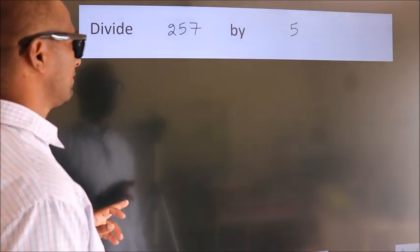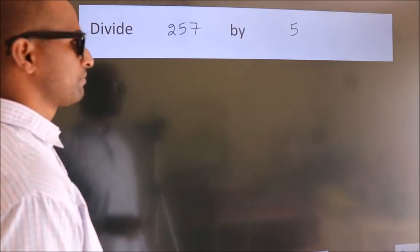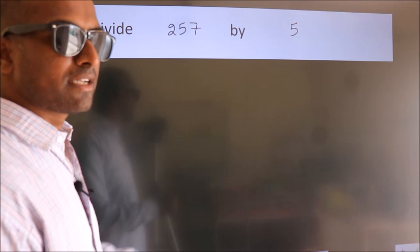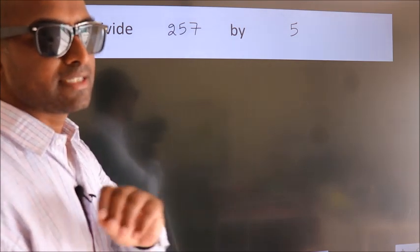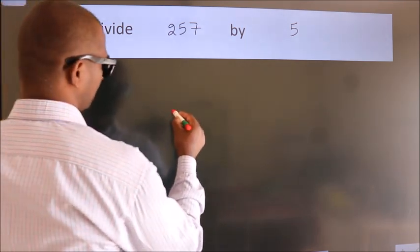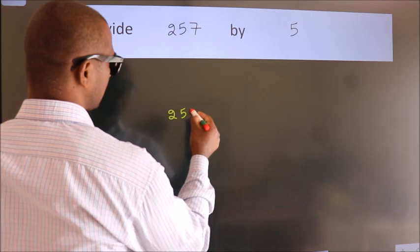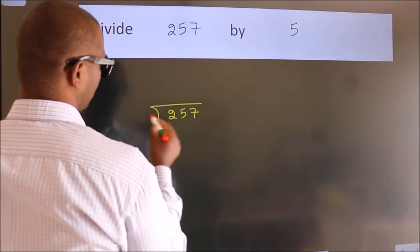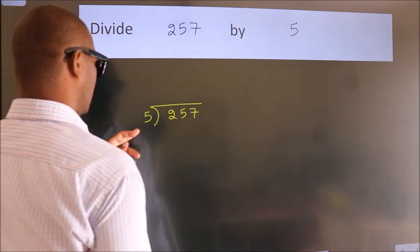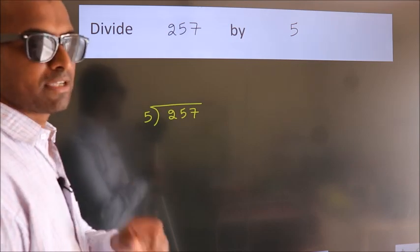Divide 257 by 5. To do this division, we should frame it in this way. 257 here, 5 here. This is your step 1.